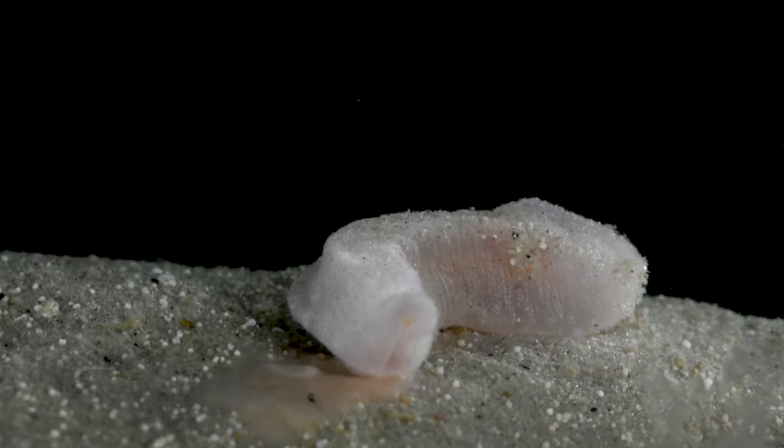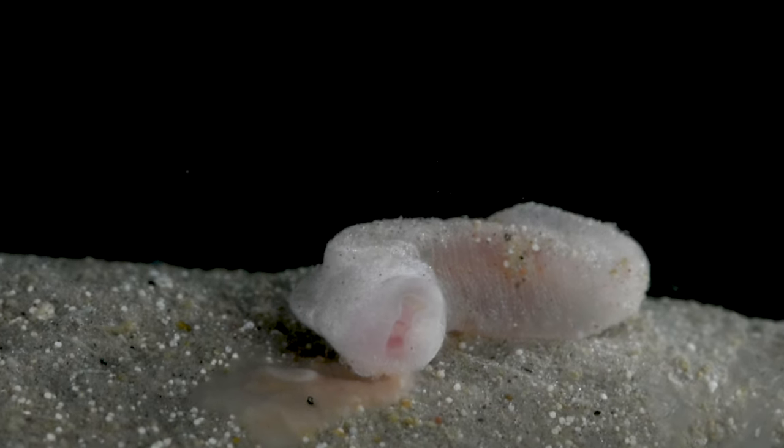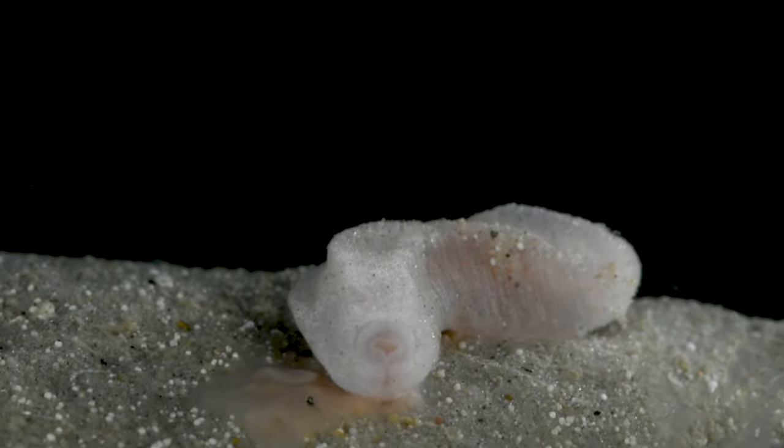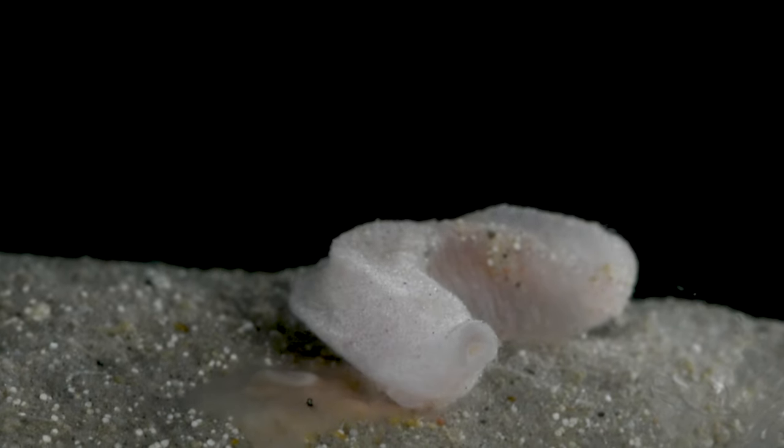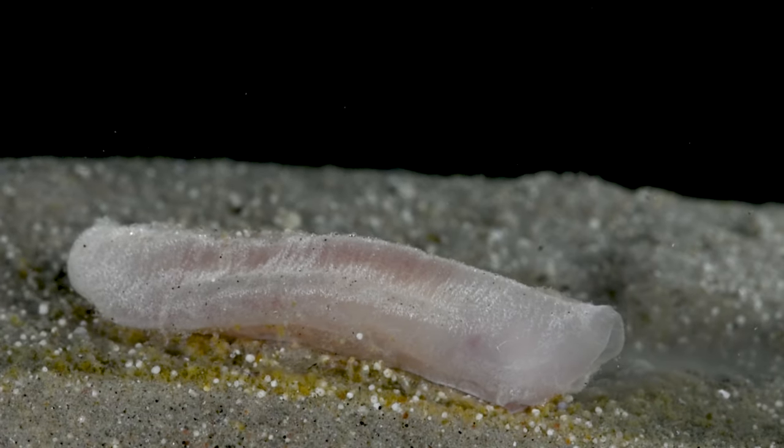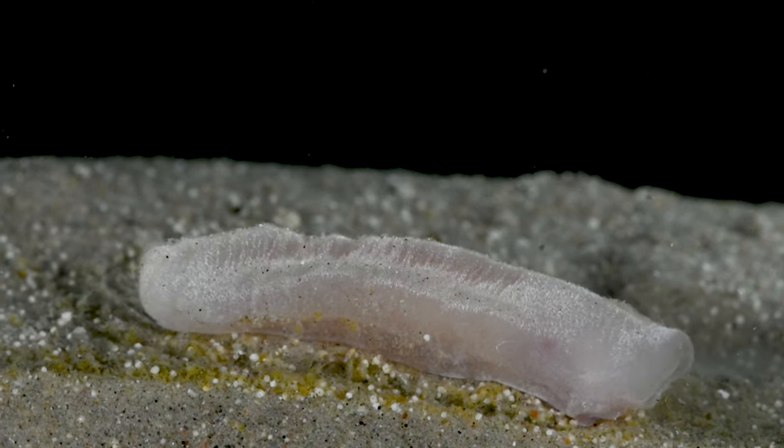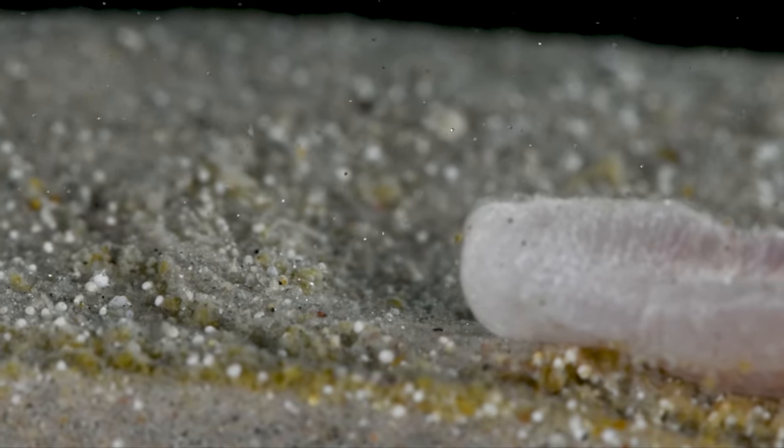This Neomenia flexes its atrium, smelling the water column hoping to get a taste of its favorite food, anemones. This animal seems to have smelled something and takes off in search of its prey. It leaves a small trail in its wake.